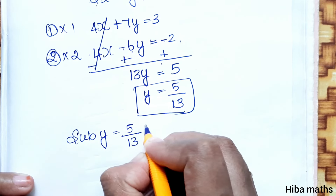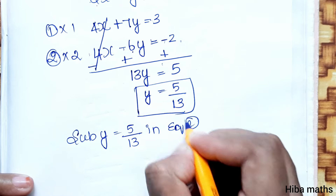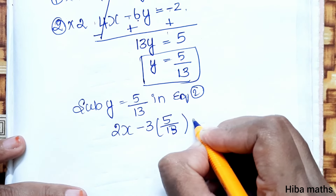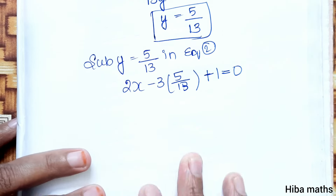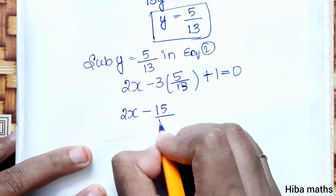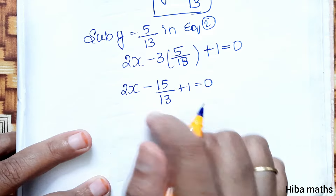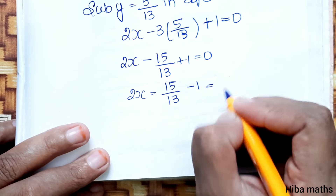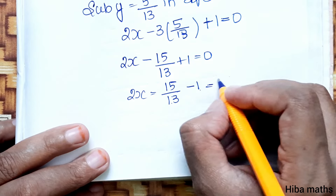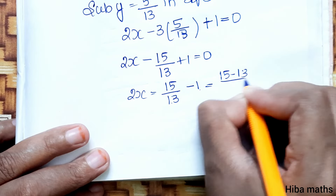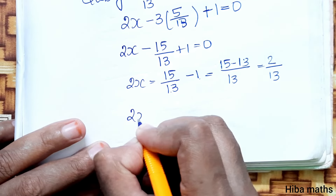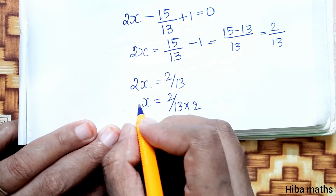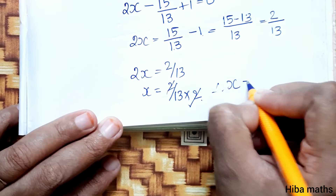Now substitute y = 5/13 into equation 2: 2x - 3 × (5/13) + 1 = 0, which gives 2x - 15/13 + 1 = 0. Solving: 2x = 15/13 - 1 = (15 - 13)/13 = 2/13. Therefore, x is equal to 1 by 13.